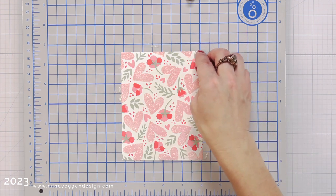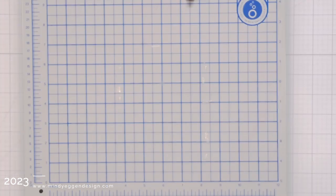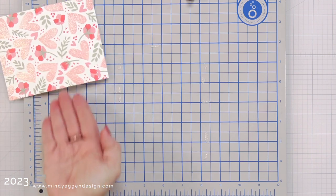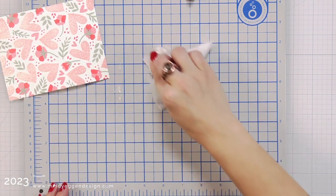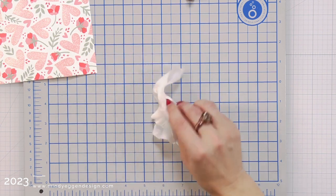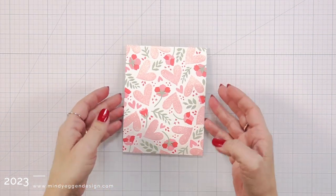I almost ruined my background here. When I picked it up, it just kind of flew across my table and thankfully it landed on my lap. So I'm going to place that off on the side and I'm going to clean up my work surface with a baby wipe and then take my stencil over to the sink and wash that off right away.